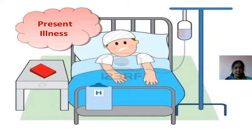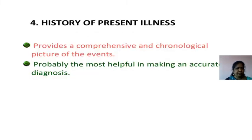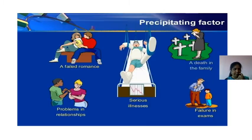Now we will see the present illness. In the history of present illness, we take: duration — weeks, months, or years; mode of onset — abrupt, acute, subacute, or insidious; course — continuous, episodic, fluctuating, deteriorating, improving, or unclear; precipitating factors such as death in the family, separation, job loss, frightening experiences; and aggravating and relieving factors. This history provides a comprehensive, chronological picture of events and is most helpful for making an accurate diagnosis.